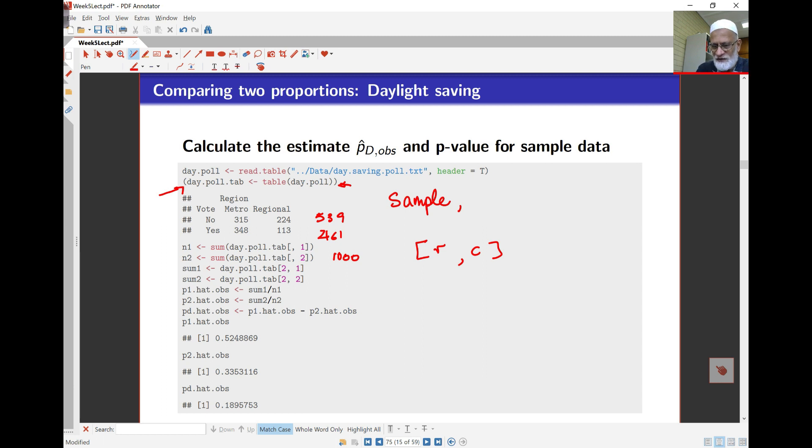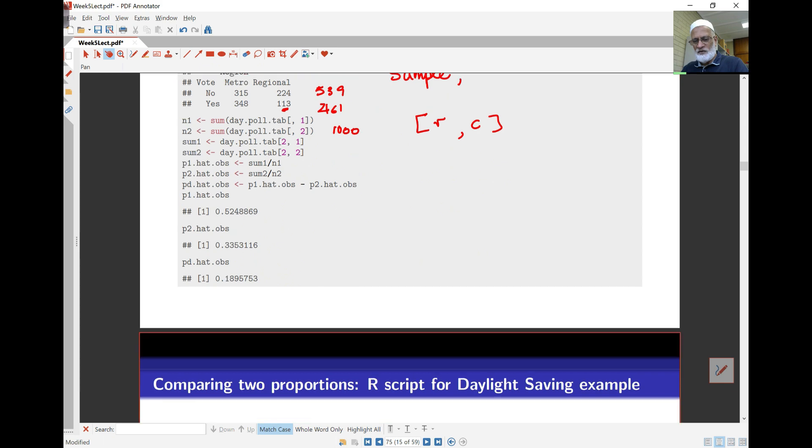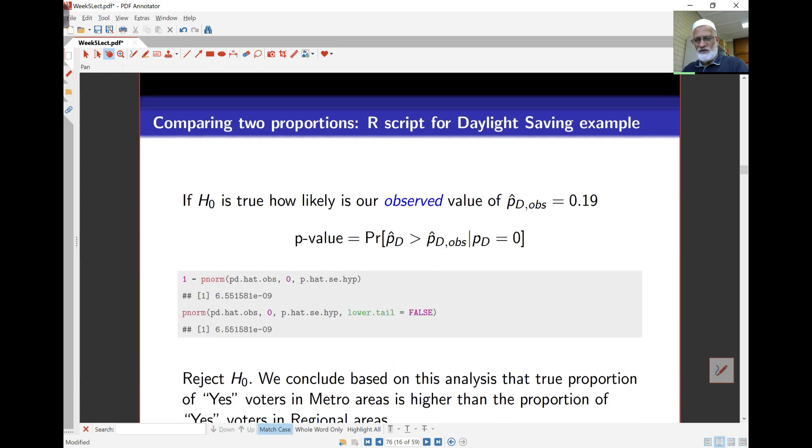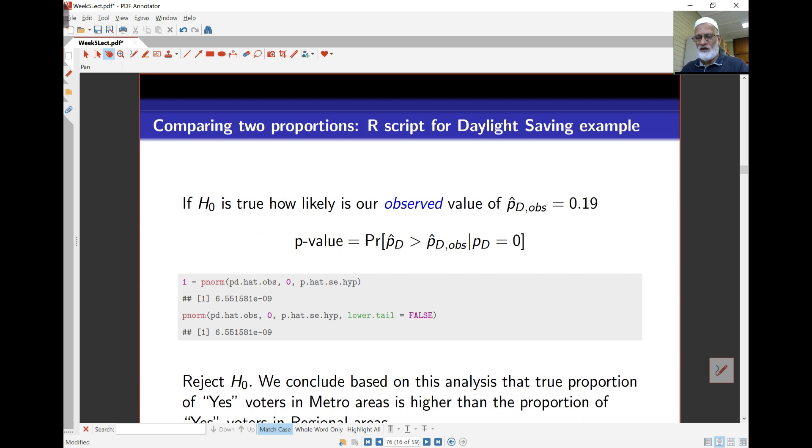This is 2-2, so second row and second column, working out the number of yes-votes in regional. Then I've got the p1 hat observed as the number of yes-votes over the sample size and the same as p2 hat observed. I've got the difference. All those things are there. You can see that I've got the values printed out there: p1 hat, p2 hat and the difference.